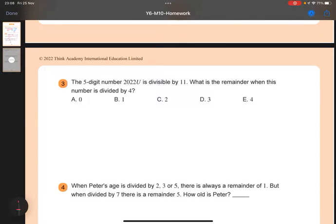Then, question number 3. So the 5-digit number 2055u, sorry, 2022u, is divisible by 11. What is the remainder when the number is divided by 4?